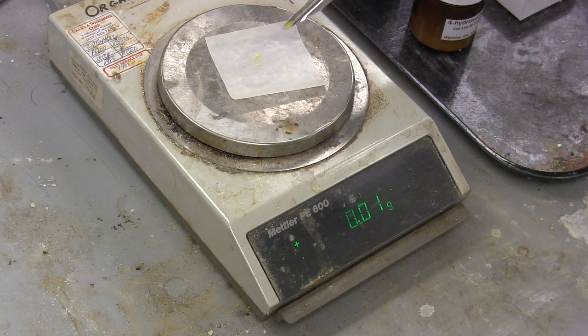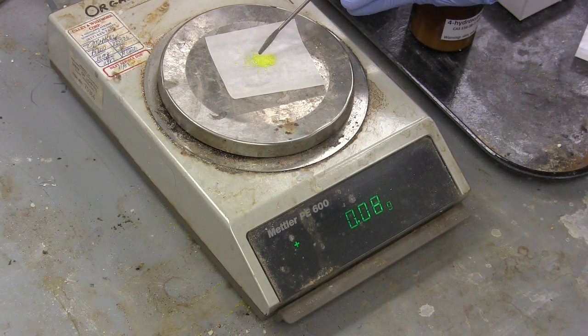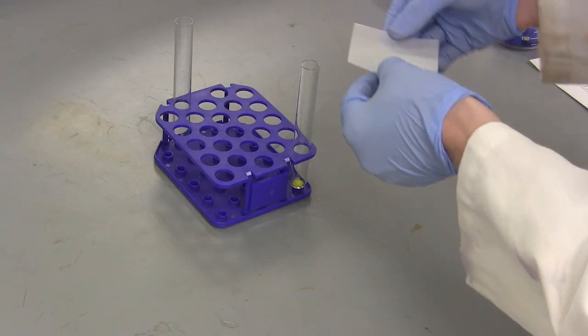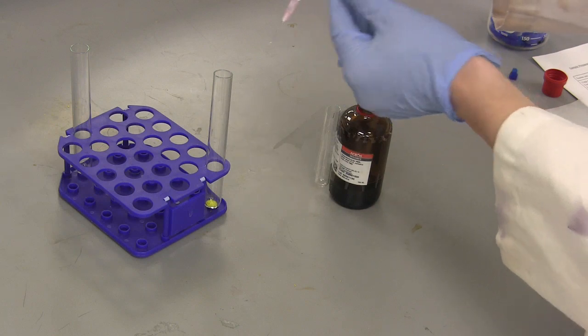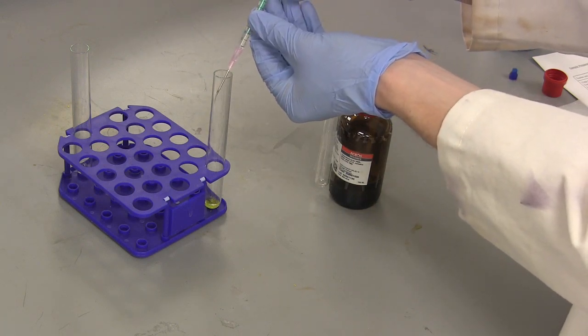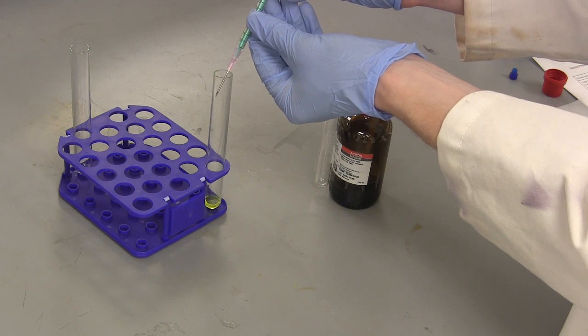For preparing a solid, weigh out a small 100 mg portion of your product and place it in your test tube. Then with the syringe, take 0.7 ml of deuterated solvent and add it to your test tube. We are using deuterated chloroform in the video.